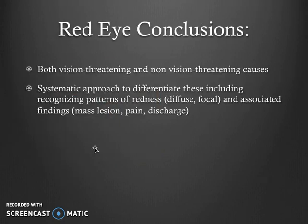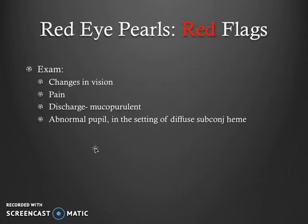In conclusion, there are both vision-threatening and non-vision-threatening causes of the red eye. A systematic approach to differentiating these includes recognizing patterns of redness — diffuse versus focal — and associated findings such as mass lesion, pain, and discharge. Red flags include changes or loss of vision, significant pain, discharge — especially mucopurulent discharge — and an abnormal pupil in the setting of diffuse subconjunctival hemorrhage. This concludes the video on the scleral and conjunctival causes of the red eye. Thank you very much for your attention.